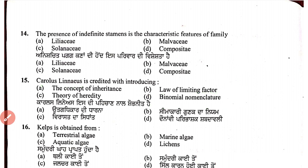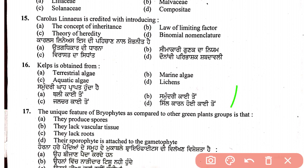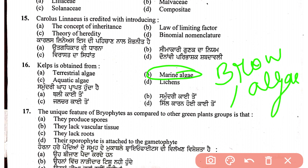Sixteenth question: kelp is related to the marine environment. Seventeenth question: the unique feature of bryophytes compared to other green plant groups — they lack vascular tissue, lack true roots, and the sporophyte is attached to the gametophyte.